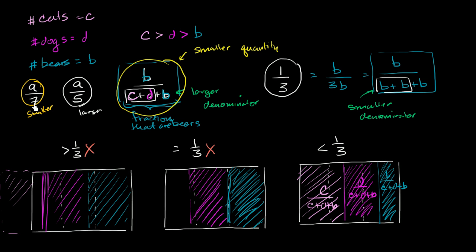So the same numerator, the larger the denominator, the smaller the quantity is going to be. So going back to the original question, this is the smaller quantity. And this right over here, 1 third, is the larger quantity.